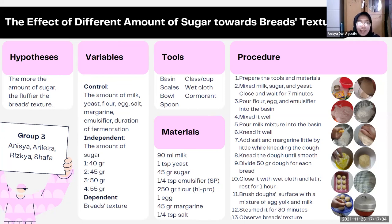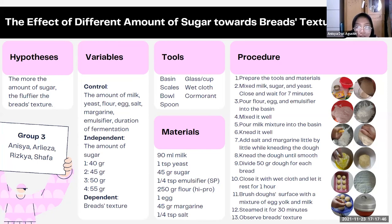The title is 'The Effect of Different Amount of Sugar Toward Bread Texture.' The hypothesis is: the more amount of sugar, the fluffier the bread texture. The next part will be delivered by my friends.